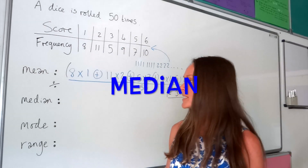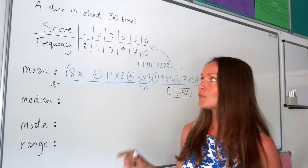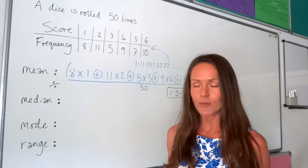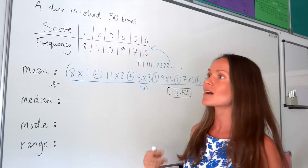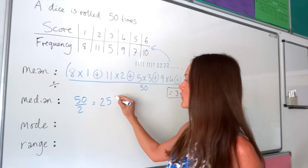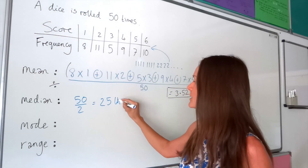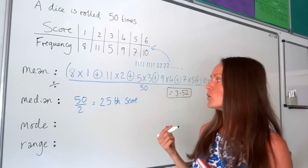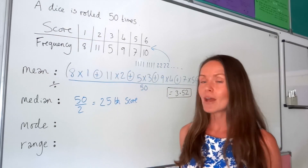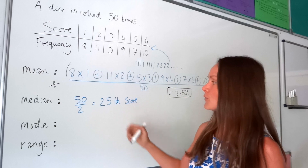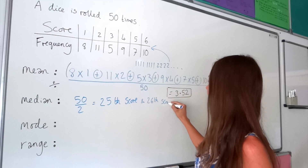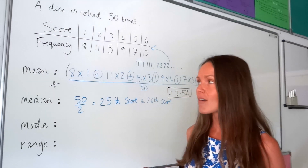The median is the middle value — if you were to write all the numbers out from smallest to largest, the middle one is the median. We have 50 scores, and dividing 50 by 2 gives 25. But whenever you have an even number of results, there will be two middle answers: the 25th and the 26th score. We need to work out where those fall in our table.